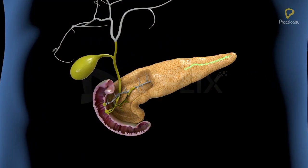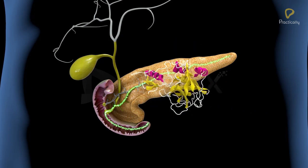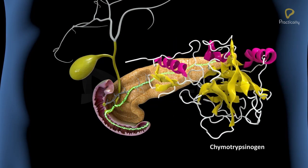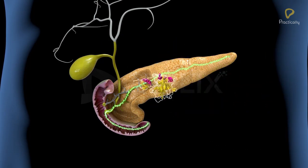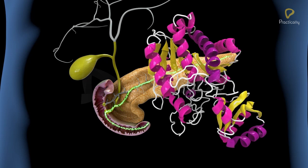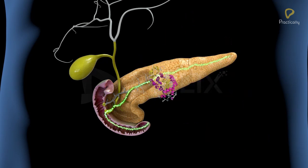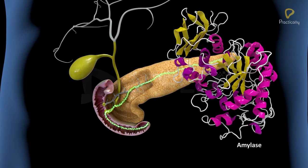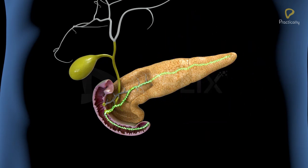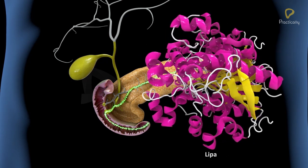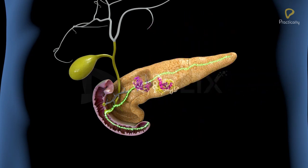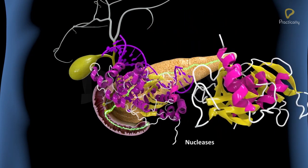The pancreas produces pancreatic juice. It contains enzymes like trypsinogen, chymotrypsinogen, carboxypeptidase, amylase, lipase (steepsin), and nucleases.